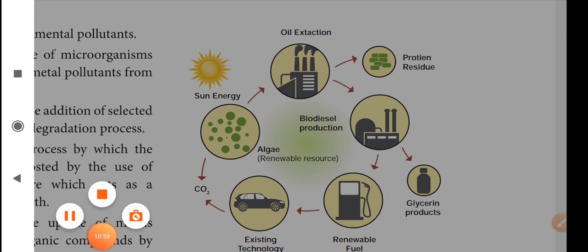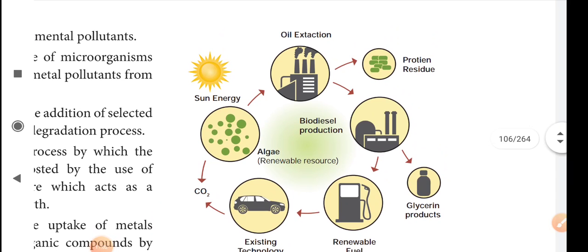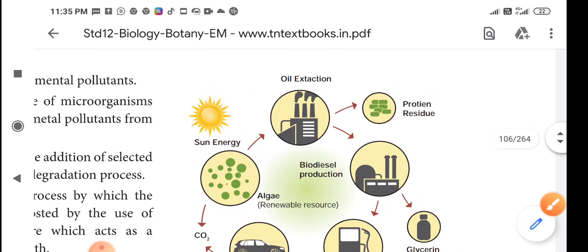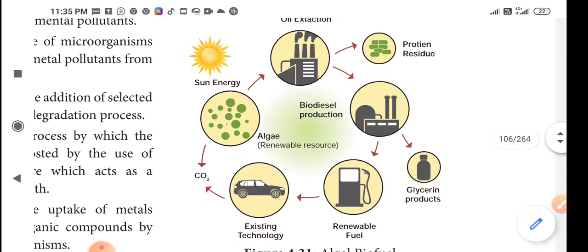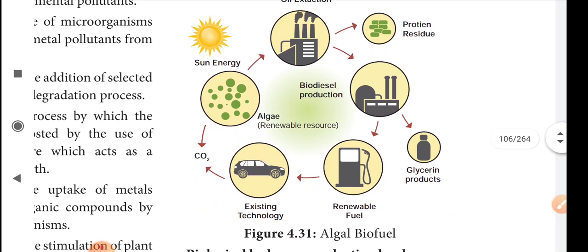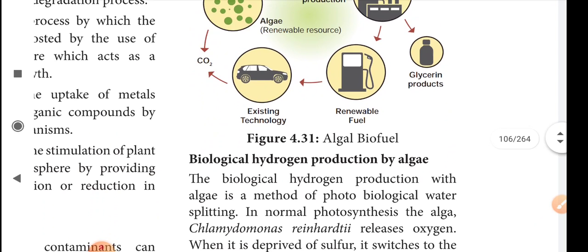Algae use sunlight and carbon dioxide to grow and produce oil, which is used to produce biofuels. Cars emit CO2, and that CO2 can in turn be used to grow more algae, forming a renewable cycle of biofuel production.